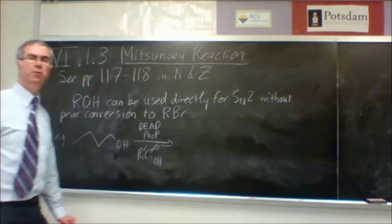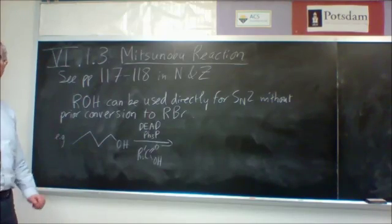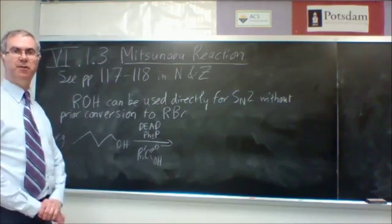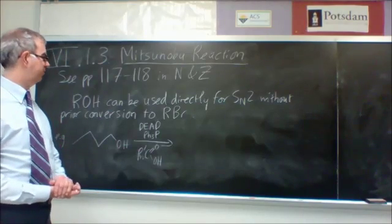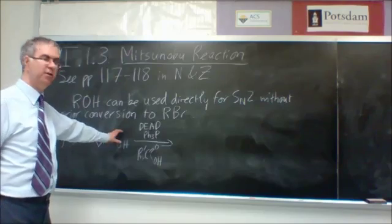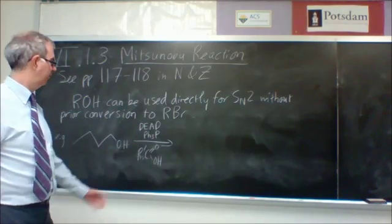If we want to make this alcohol into the corresponding ester, which may have some acid-sensitive groups in there, so we want to avoid Fischer esterification, we can use this method that in effect turns this into something like an alcohol halide.